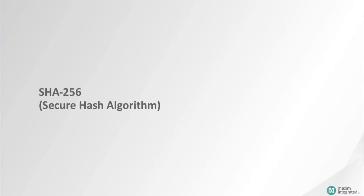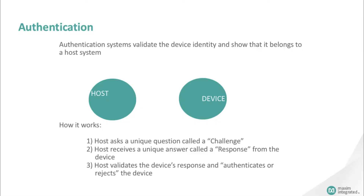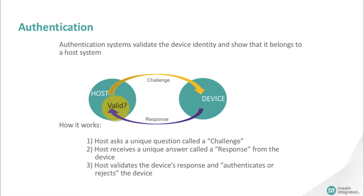Another crypto algorithm type uses a symmetric key instead of an asymmetric key like ECDSA. In such systems, authentication happens when they validate the device identity and show that it belongs to a host system. This is how it works: first, the host asks a unique question called a challenge; second, the host receives a unique answer called a response from the device; third, the host validates the response and authenticates or rejects the device.